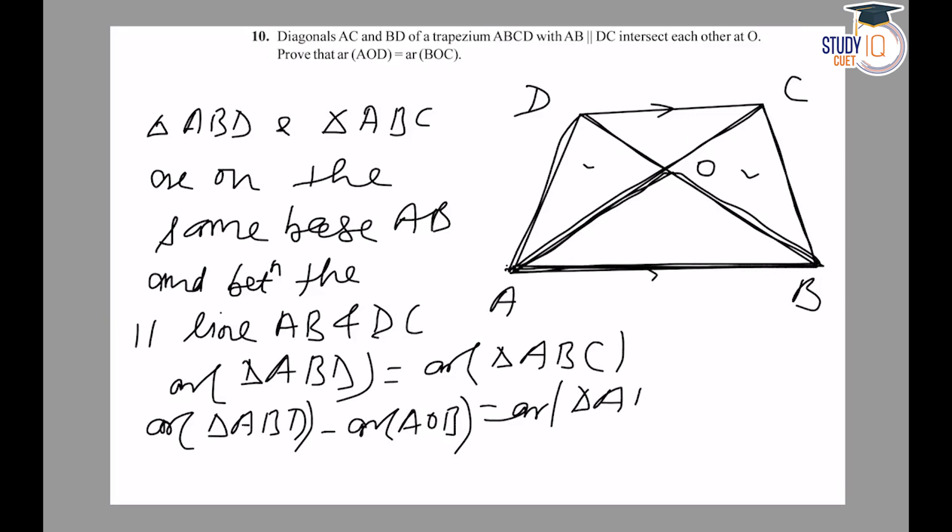Similarly, area of triangle ABC minus area of triangle AOB equals area of triangle ABD minus area of triangle AOB. Therefore, area of triangle AOD equals area of triangle BOC.